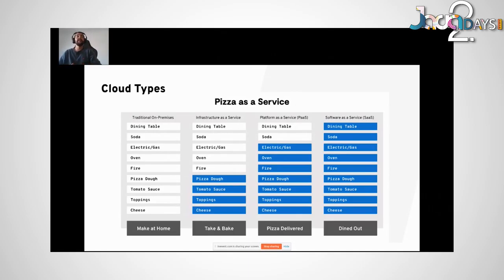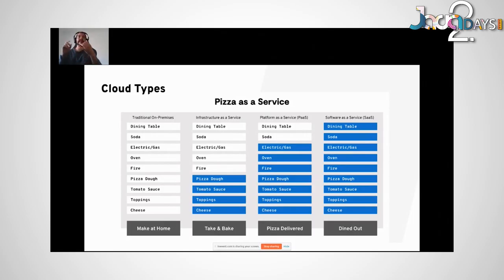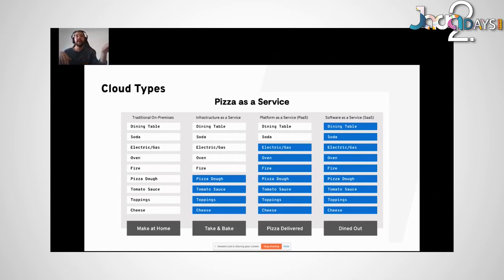The last and easiest way is dining out. You go to the restaurant, you don't need to prepare the pizza, set the table, or clean the dishes. You just sit down, order, wait, eat, and pay the bill. The whole complexity belongs to the restaurant. In cloud terms, that is Software as a Service — SaaS — like Gmail, for example.